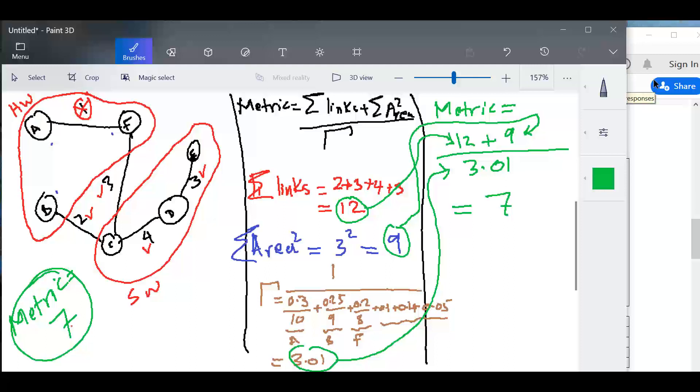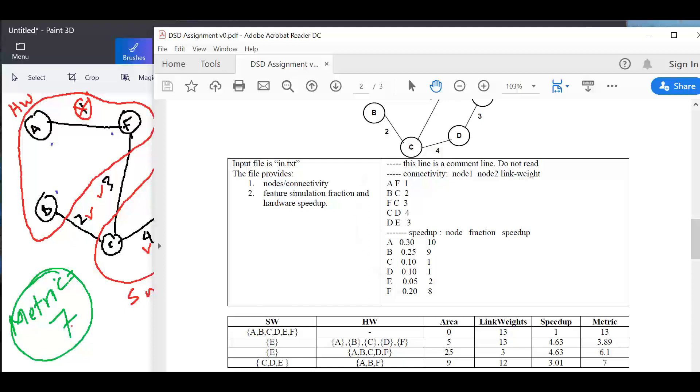The other question that I received: can we change those weights and speedups? Of course, they can be changed. Because when you read this input file right here, this input file can change, right? I can change it, and this leads to a different partition. So these are the parameters for your program, and those parameters will dictate the optimum solution. If those parameters change, the optimum solution changes.